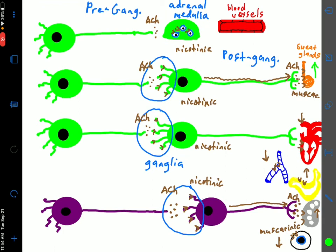Besides that exception, all other sympathetic post-ganglionic neurons, when excited by an action potential, release norepinephrine rather than acetylcholine. This applies to the lower pathway and also to the chromaffin cells at the adrenal medulla, which release norepinephrine and epinephrine into the bloodstream, producing a hormonal response. This is one reason why the sympathetic division has a longer-lasting, more widespread response — because of this hormonal component in addition to the neural response.